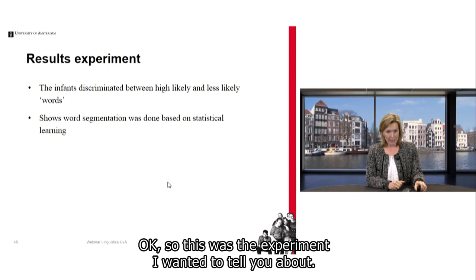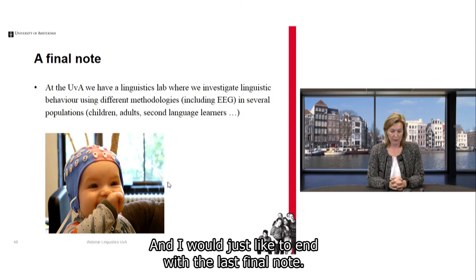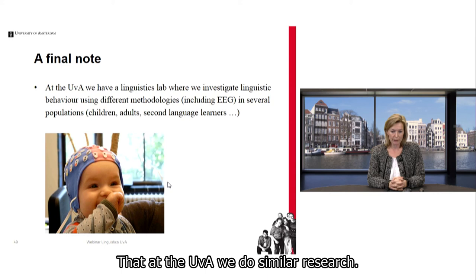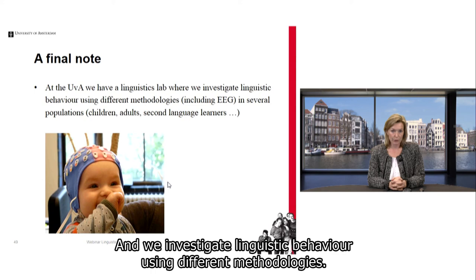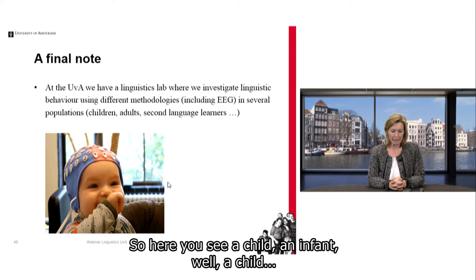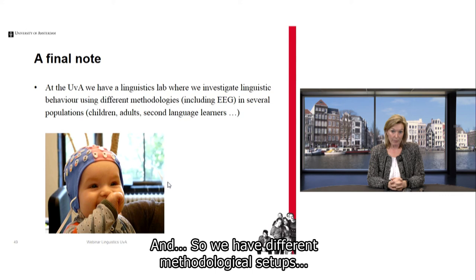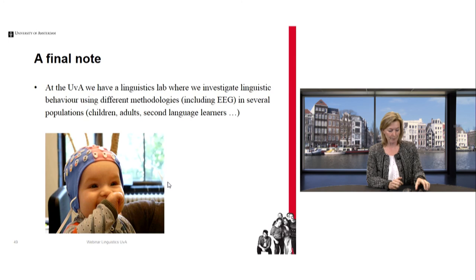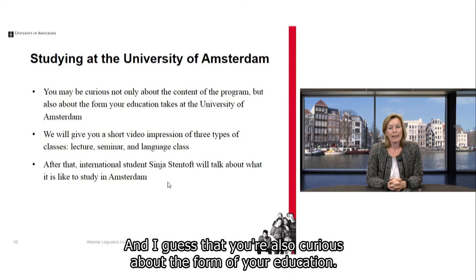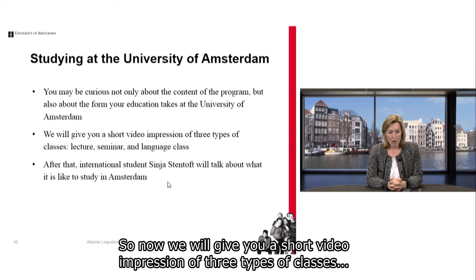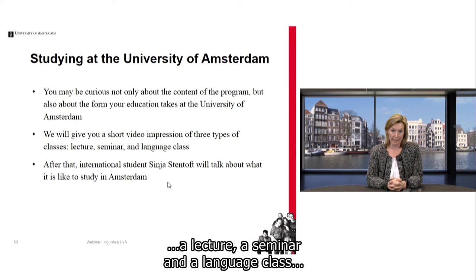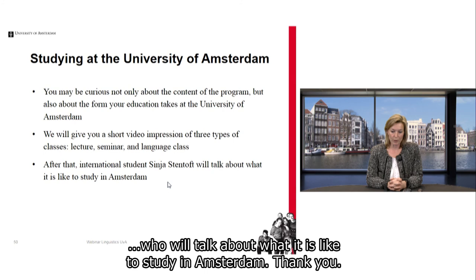At the University of Amsterdam, we do similar research. We have a linguistics lab where we investigate linguistic behaviour using different methodologies — including EEG experiments where a child is fitted with an electrode cap. I gave you a flavour of the content of our programme, and now we will give you a short video impression of three types of classes: a lecture, a seminar, and a language class. After that, our international student Sinja Stentoft will talk about what it's like to study in Amsterdam.